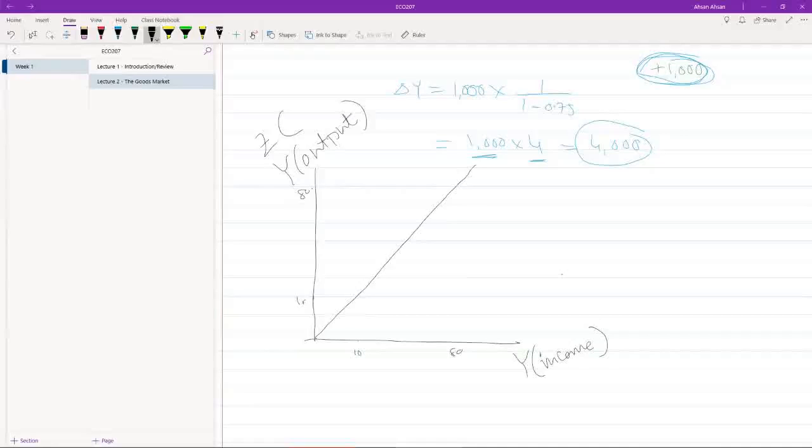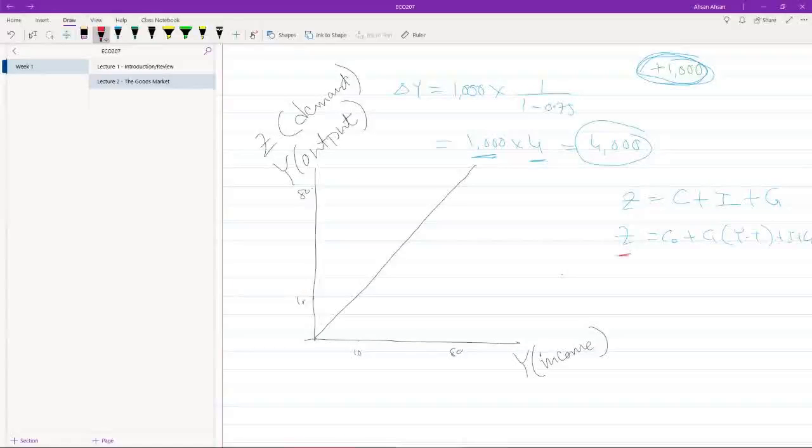Along with this, I also want to draw the demand curve as a function of income. What do we know about demand? The demand curve was c plus i plus g. When we simplified this, what we had was c naught plus c1(y minus t) plus i plus g.